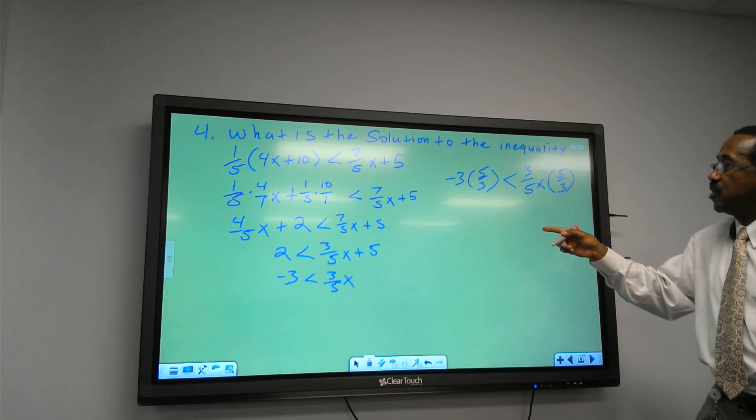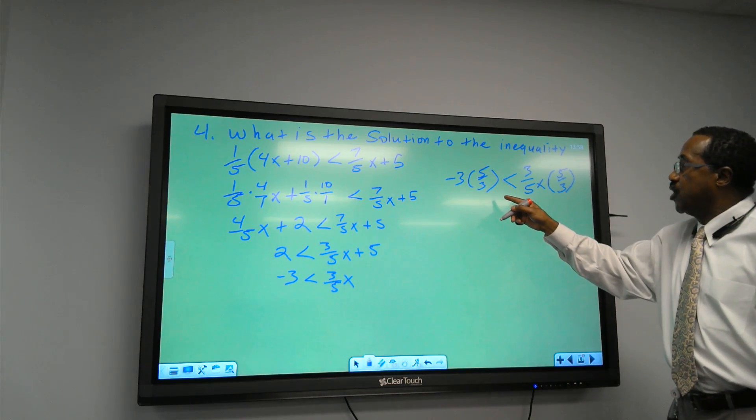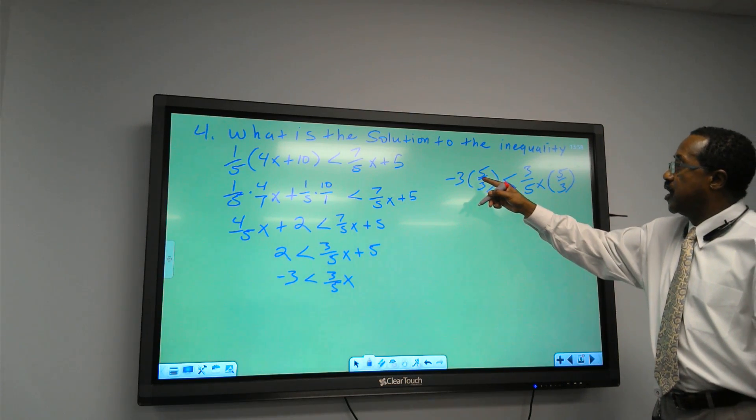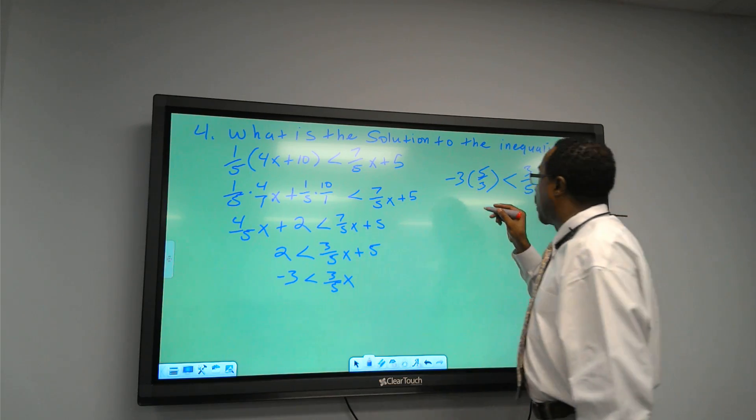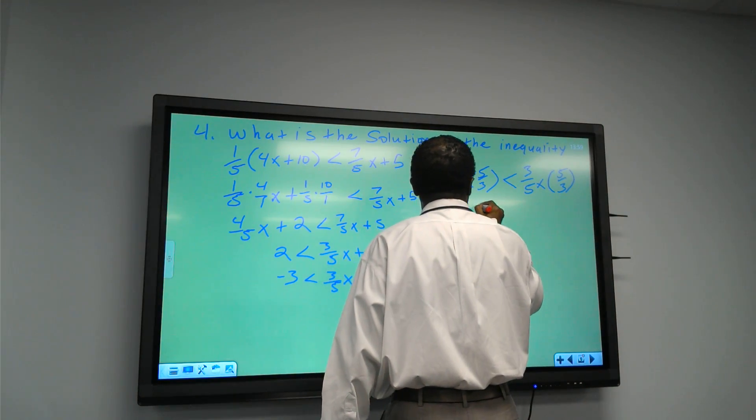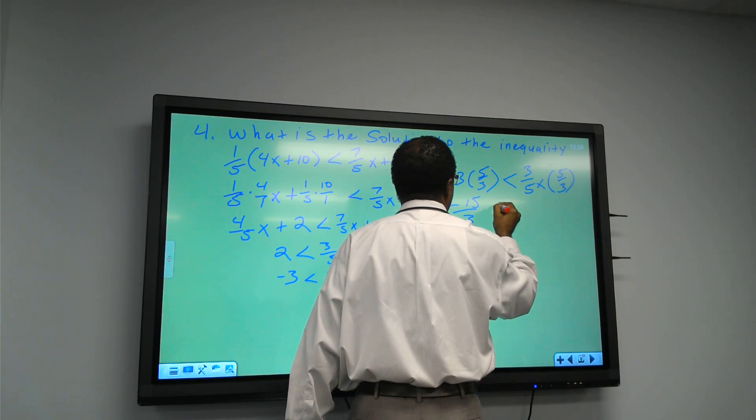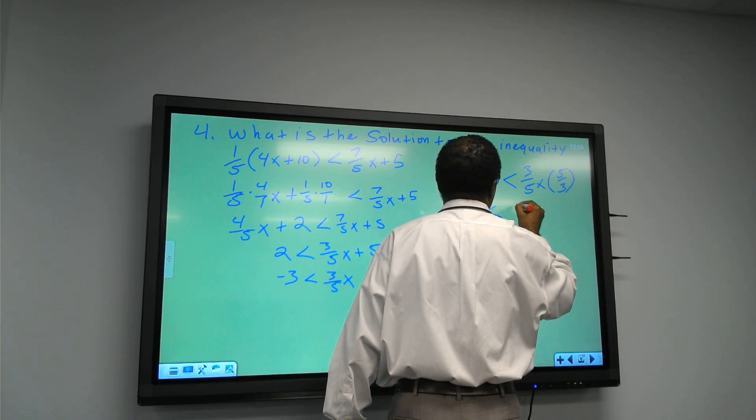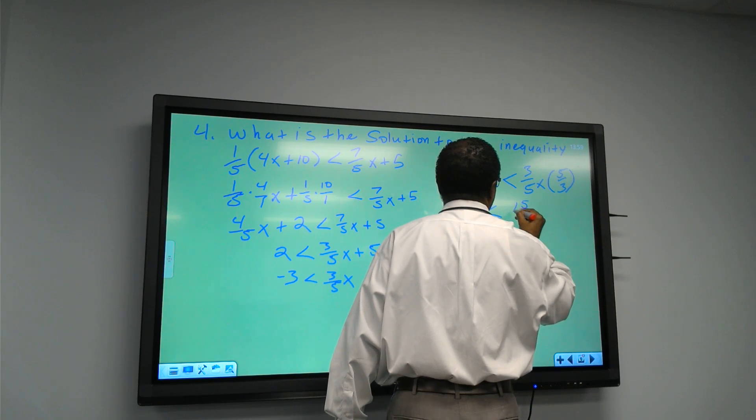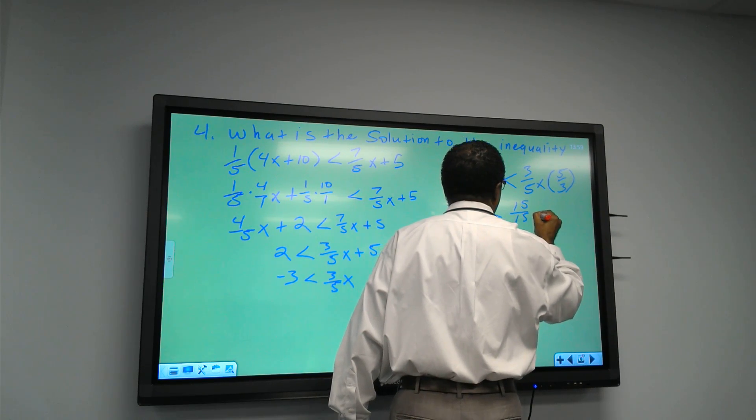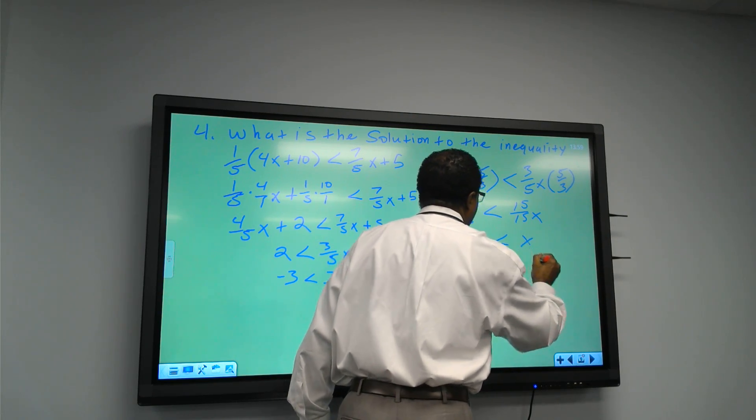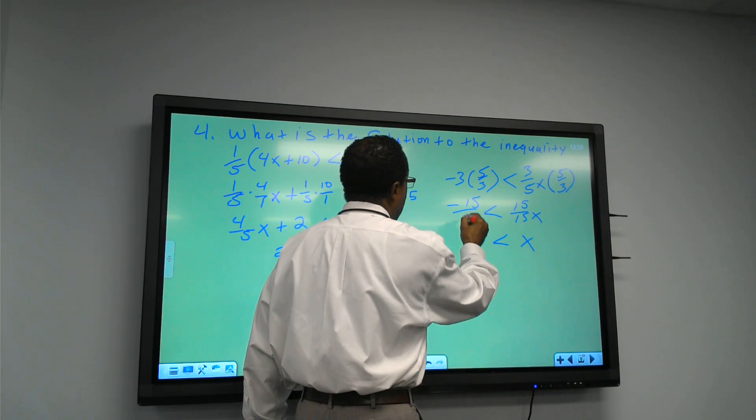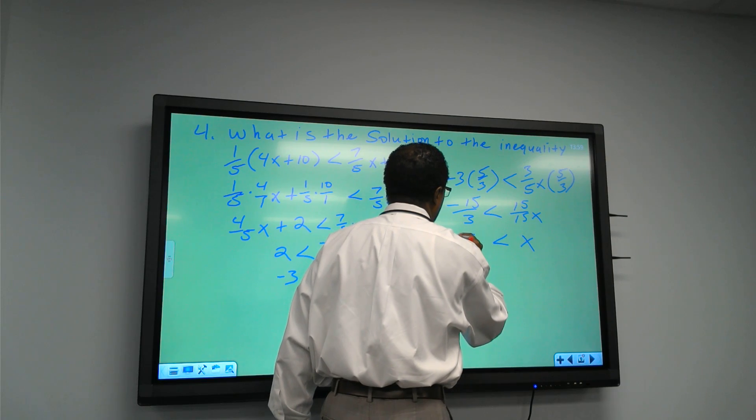Now, if you want to go through this long, drawn-out math and say 3 times 5, negative 3 times 5 will give us a negative 15 over 3 is less than, and then 5 times 3 is 15, and 3 times 5 is 15x. And we know that that's going to equal to 1, which is just 1x. And here, if we divide, we'll get 5 because we have a negative.